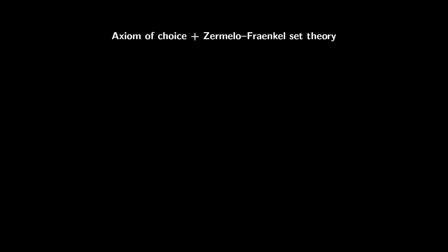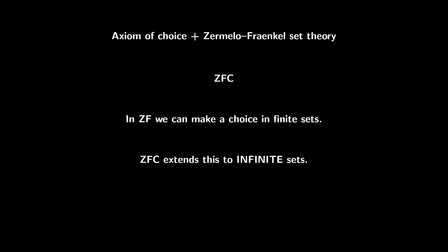The axiom anyway seems pretty natural, and most mathematicians nowadays accept it. Added to the standard Zermelo-Fraenkel set theory axioms, it forms what we call ZFC, where Z and F refer to Zermelo and Fraenkel, and C to the axiom of choice. In finite collections, we can make the choice anyway given just Zermelo-Fraenkel axioms, so this axiom just extends this to infinite sets.